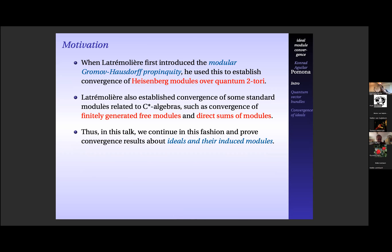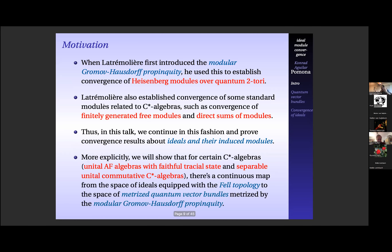The question I asked myself, once seeing Latrémolière's work, was: another natural module associated with a C*-algebra — or any ring — is ideals. Ideals induce a module, and there is a natural topology on ideals: the Fell topology, built from the Jacobson topology on primitive ideals. This talk is about the set of all ideals of a C*-algebra, not just the primitive ideals. You can extend the Jacobson topology directly, but Fell developed a different topology for the purpose of operator fields and developing results for that. The Fell topology is always compact Hausdorff for any C*-algebra, and if the C*-algebra is separable, it's also compact metrizable — a very nice topology.